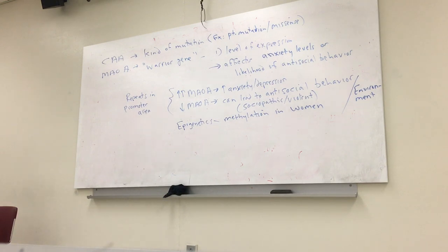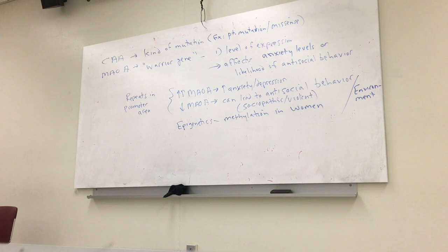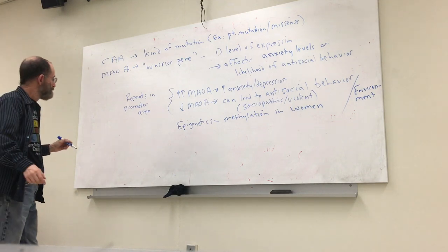The next one is Meier-Gorlin syndrome. For Meier-Gorlin syndrome, the main take-home lesson is that the control of the replication complex in humans is what's defective in this particular syndrome.